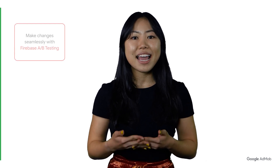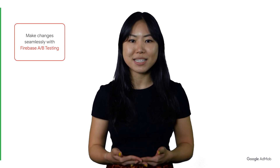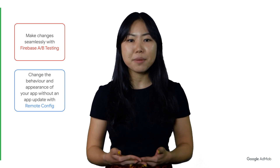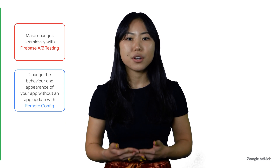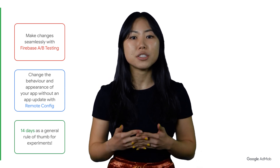And that's all we have for the first part of our Firebase series. To summarize the key takeaways: engage with Firebase A-B testing because it allows you to make changes seamlessly. With Remote Config, you can change the behavior and appearance of your app without going through an app update. 14 days is a general rule of thumb for an experiment's duration, contingent upon determining a variant as the leader. Thank you for watching Google AdMob tutorials. We hope you've learned a thing or two about Firebase A-B testing. Be sure to check out additional resources in the description box, and subscribe to the Google AdMob channel for more best practices and tips on how you can grow your app further.